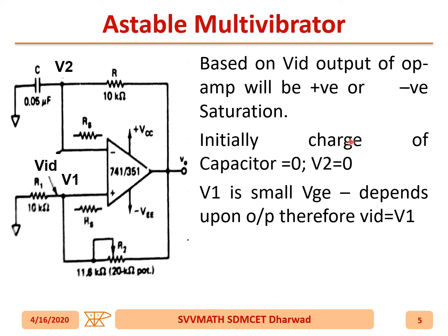Initially, the charge on the capacitor is assumed equal to zero, and hence V2 is zero — the voltage across the capacitor is zero. V1 is a small voltage. Depending upon the output, whether it is +Vsat or -Vsat, some voltage is present at V1. Now, V_id becomes V1.